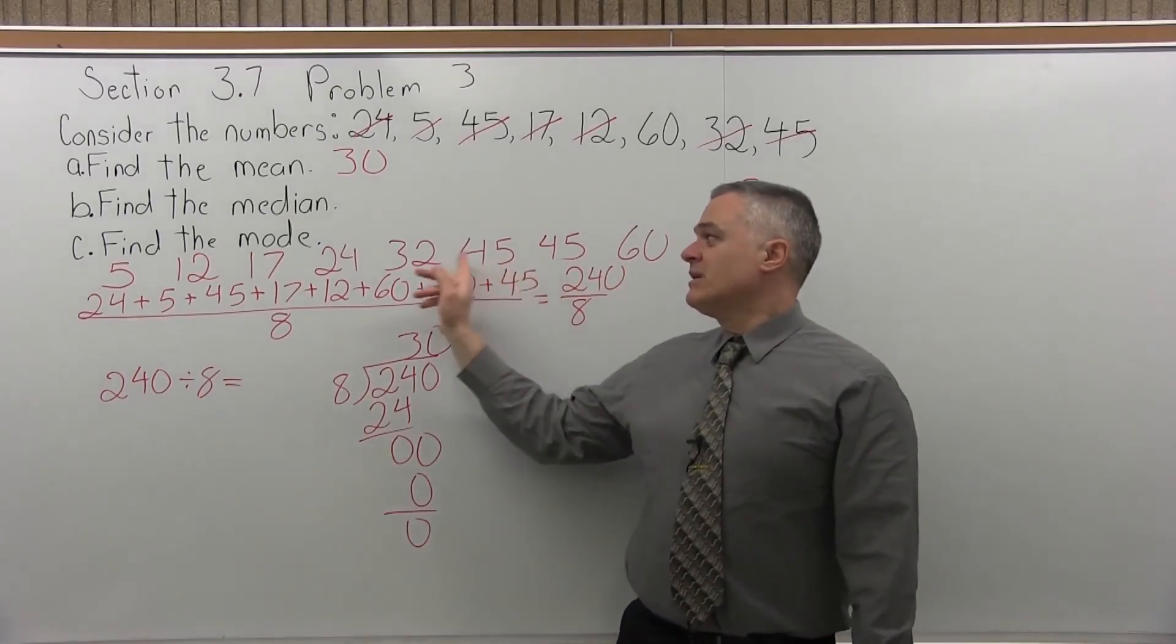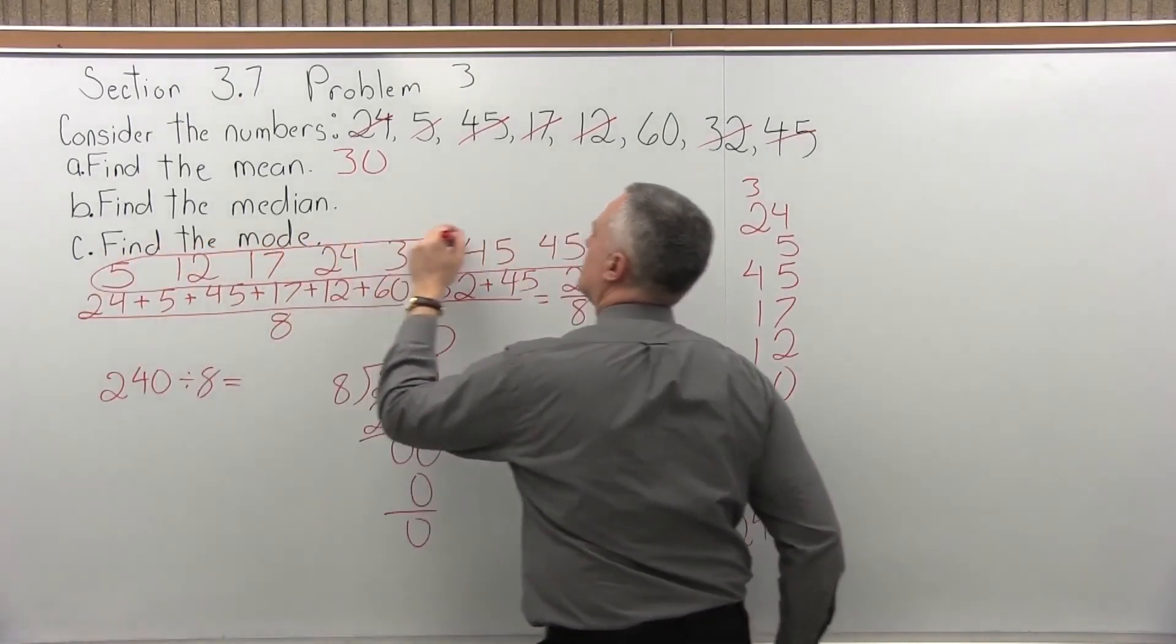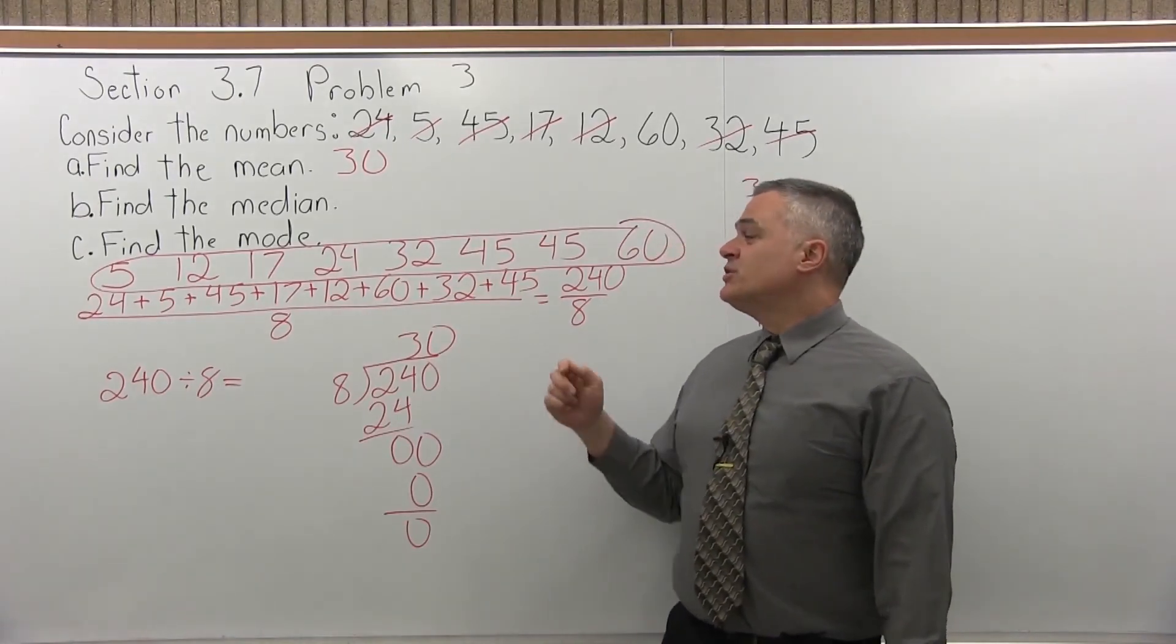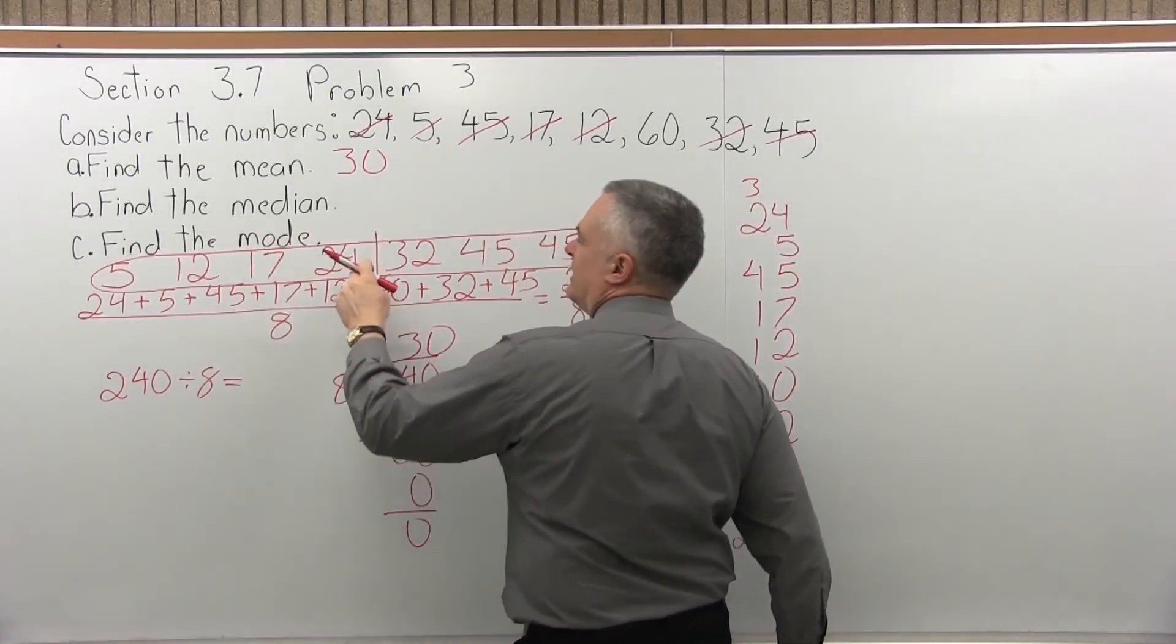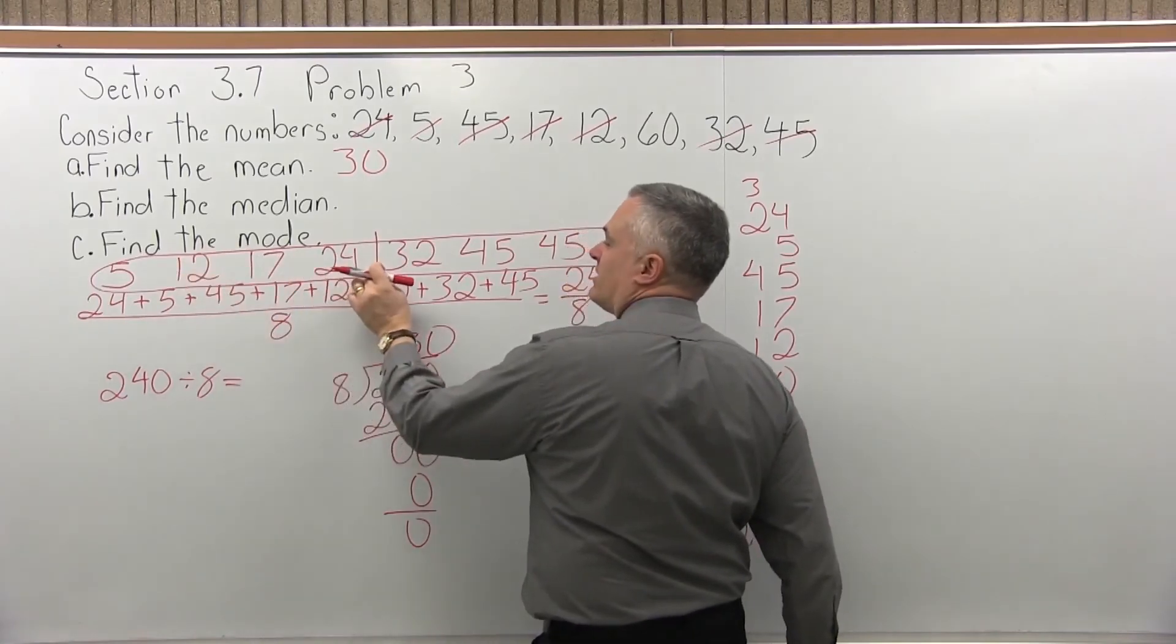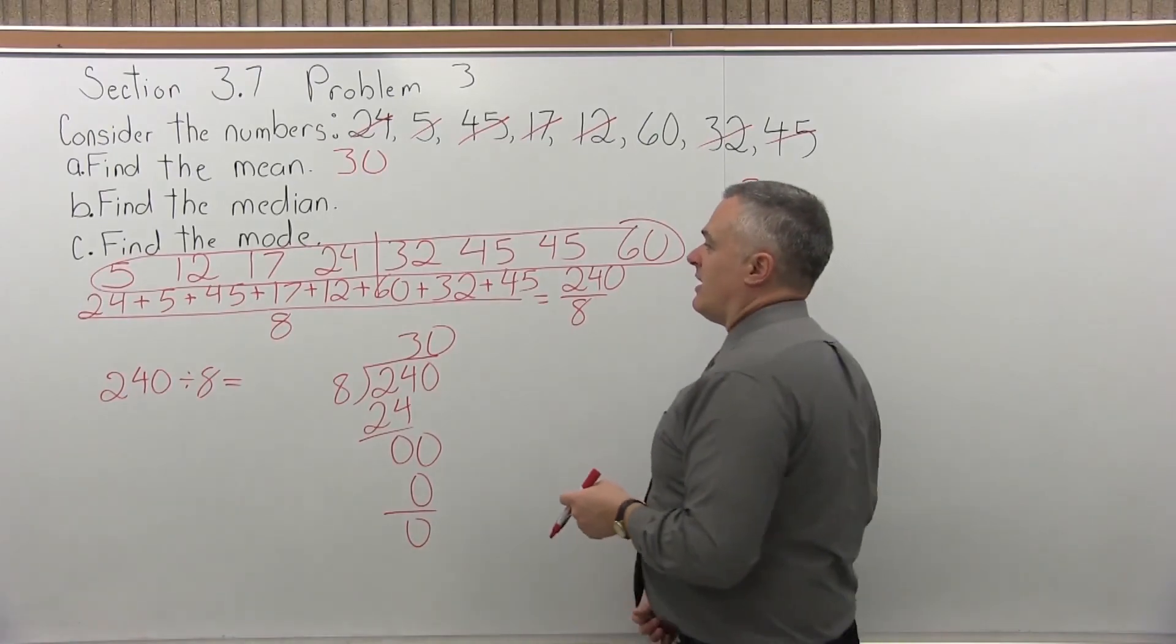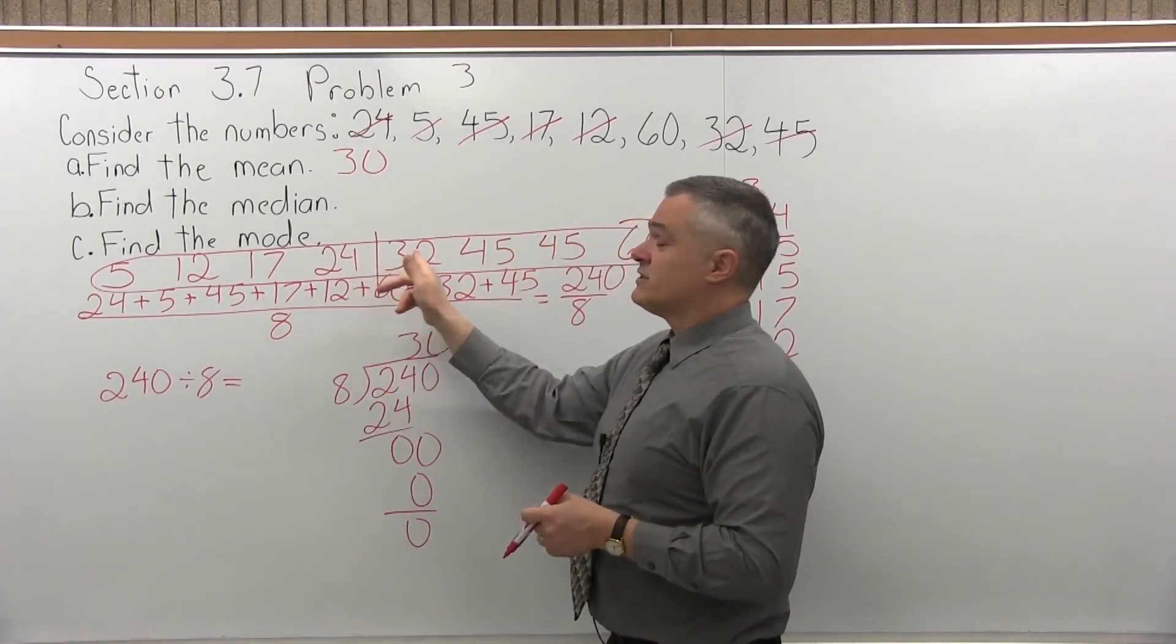Now what you want to do is find the middle of that list. Now, in this case we have an even amount of data, we have eight numbers. Eight's even. So the middle occurs between the middle two data values. So if there's eight, if I count in one, two, three, four, the middle spot of this list is between the 24 and the 32. There's four numbers smaller than that spot and four numbers that are larger. So I have to split the 24 and the 32.